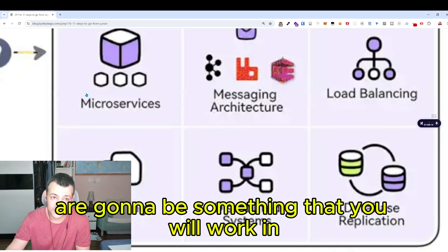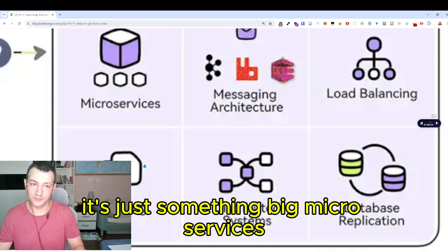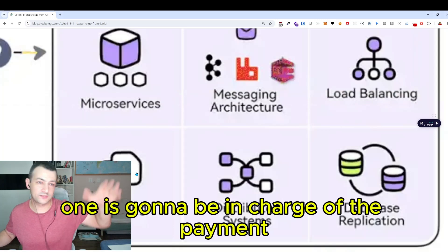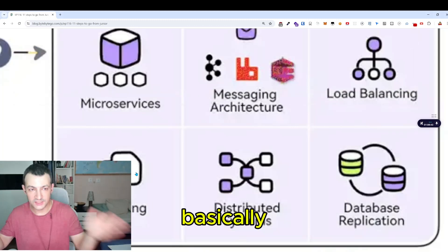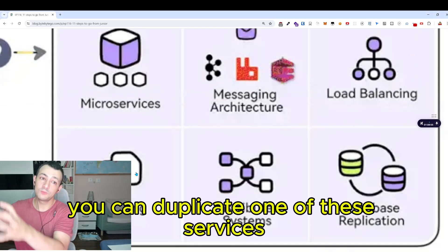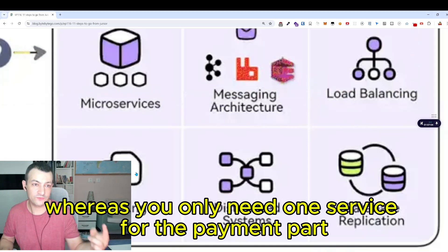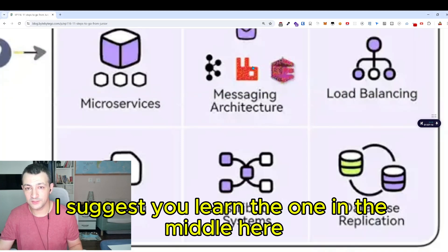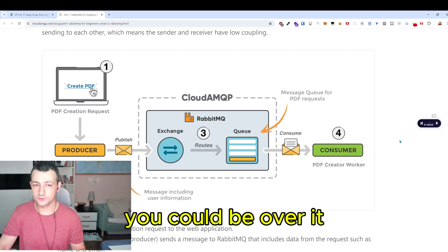Microservices are something you'll work with in medium or larger companies. Instead of one server, you split into 10 different smaller servers, each with its own responsibility — one for payments, one for video processing, one for accounts, etc. If you need more capacity for one service, you can duplicate it — maybe 10 instances of the video processing service but only one for payments. These services need to communicate via a messaging architecture. I suggest you learn RabbitMQ, the most famous message queue — you can learn the basics in just an hour.